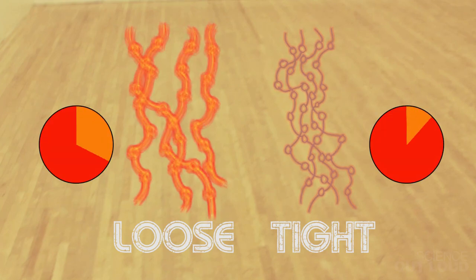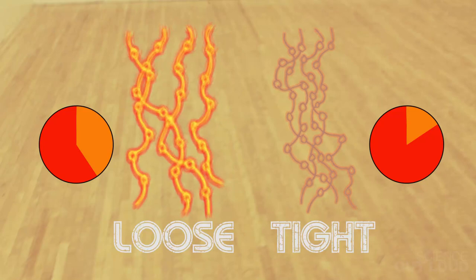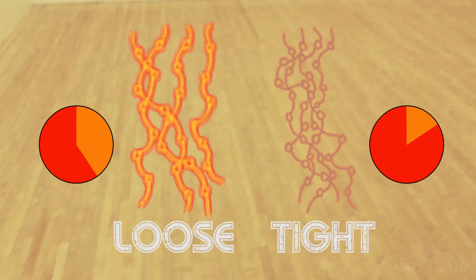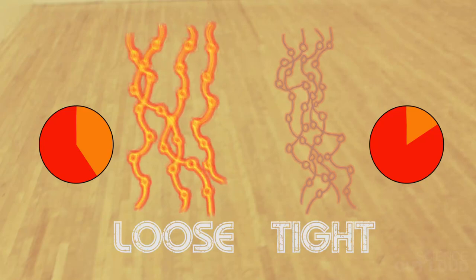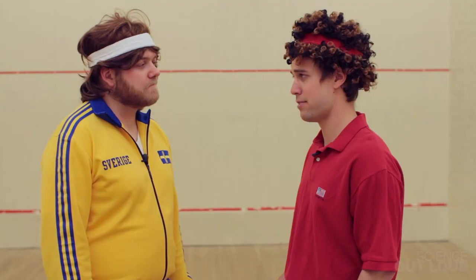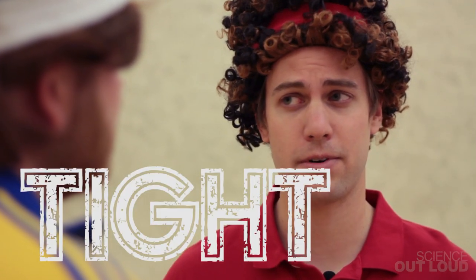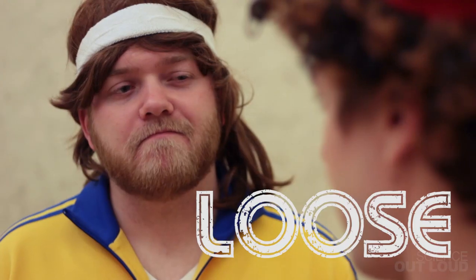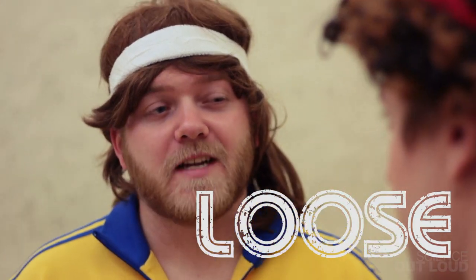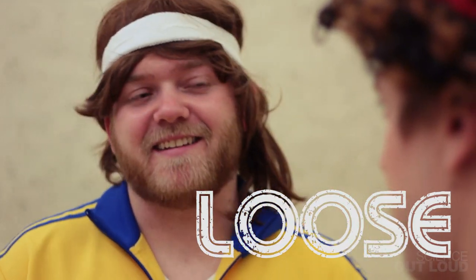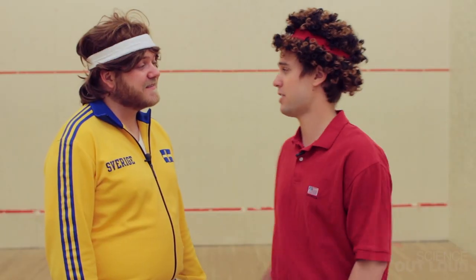And the more heat, the less kinetic energy they have. So the less kinetic energy, the less bounce? Right on. So the bouncy ball is made out of tight polymers and the other one is made out of loose polymers? Exactly. Sweet, let's play.